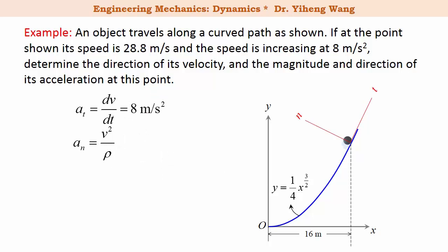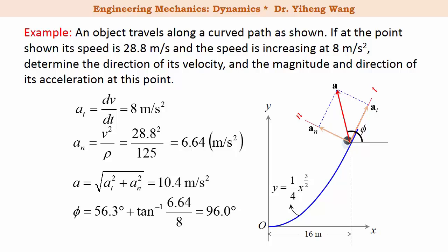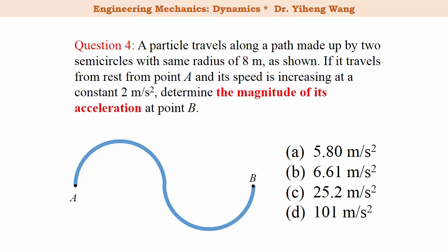Substituting ρ = 125 m, the normal acceleration an = v²/ρ = 28.8²/125 = 6.64 m/s². These are the two components of the acceleration vector. The magnitude of acceleration is √(at² + an²) = √(8² + 6.64²) = 10.4 m/s². The direction is characterized by the angle with the horizon: 56.3° (tangential axis angle) plus arctan(6.64/8), totaling 96.0°. These are the magnitude and direction of acceleration.